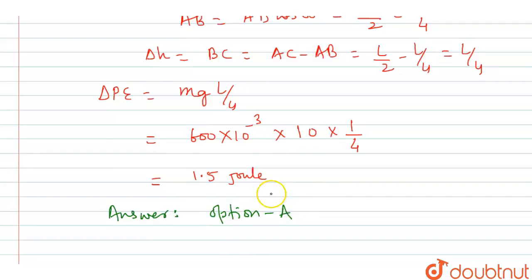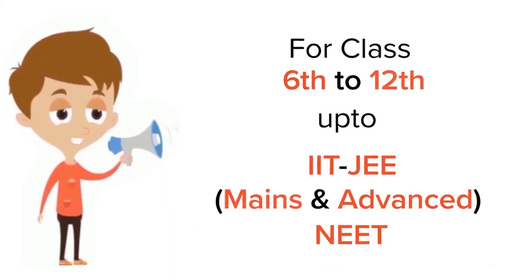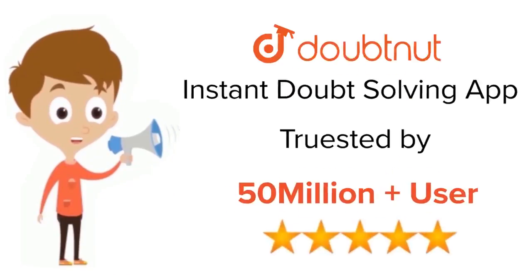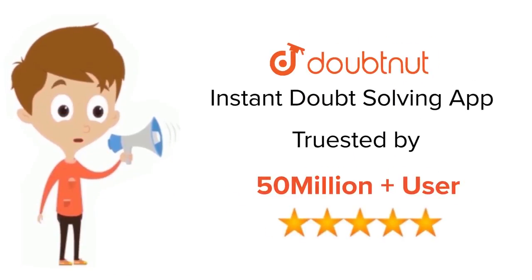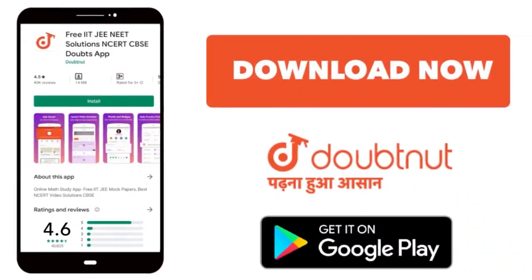This was the explanation — hope you guys understood. Bye-bye! For class 6 to 12, IIT JEE, and NEET level, trusted by more than 5 crore students — download the DoubtNet app today.